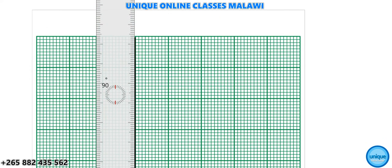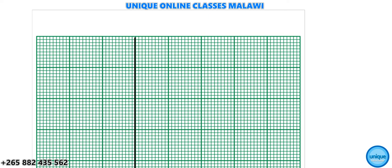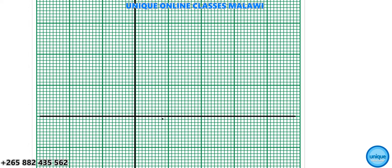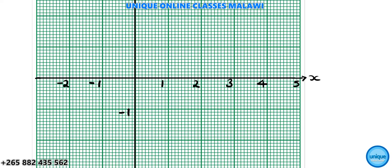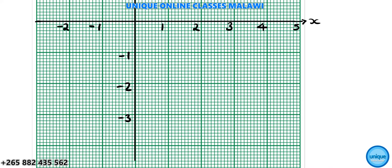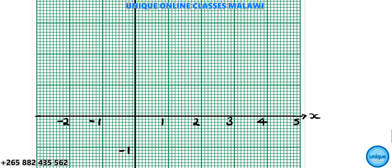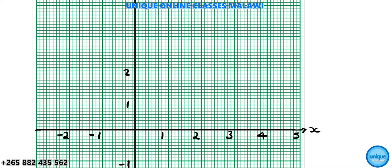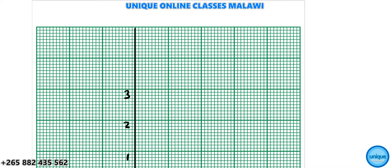Two centimeters represents one unit on both axes. Going along the x-axis we have 1, 2, 3, 4, 5 and in the negative direction: negative 1, negative 2, negative 3. On the y-axis similarly we mark negative 1 and negative 2.